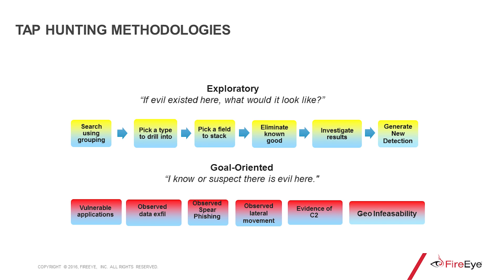The simplest way to describe them is: exploratory would be, if evil existed here, what would it look like? And to do that, you'd have to know what data you have coming in. You can search using grouping, pick a type to drill into, pick a field to stack on, eliminate known good, investigate your results, and from there, generate new detection — which is what this is really all about.